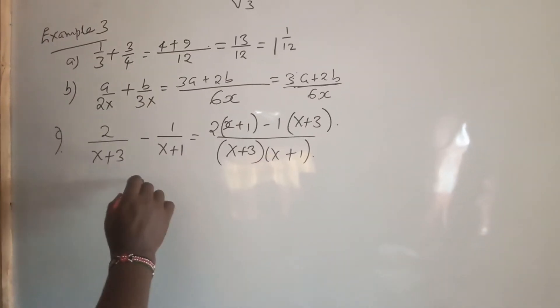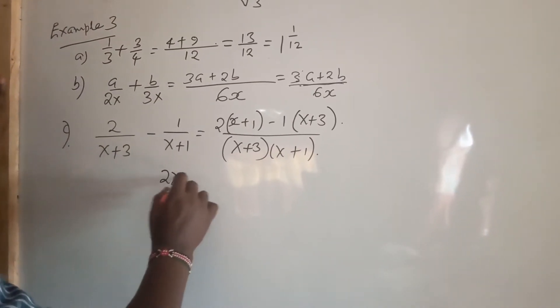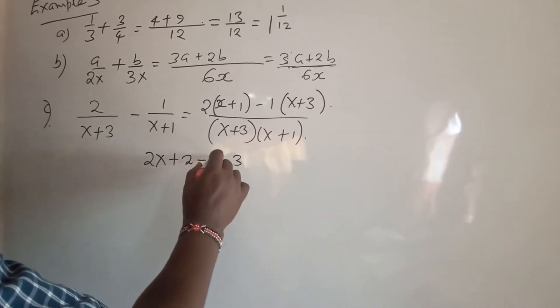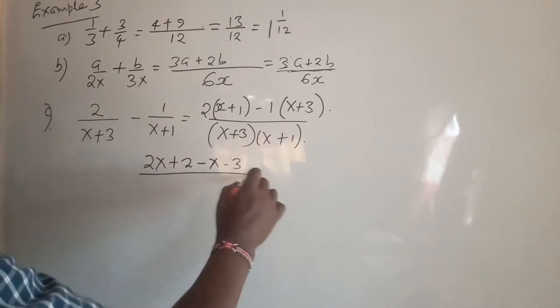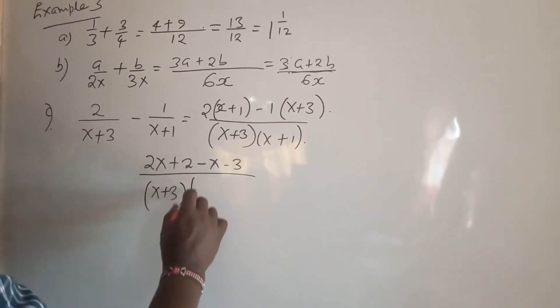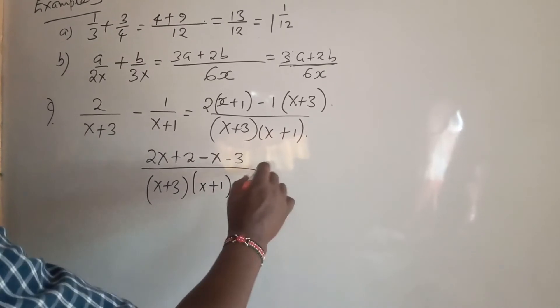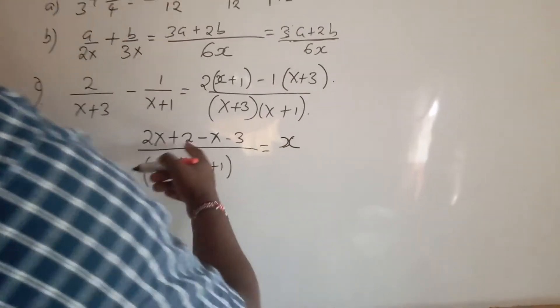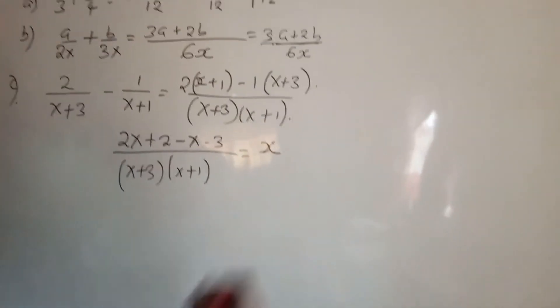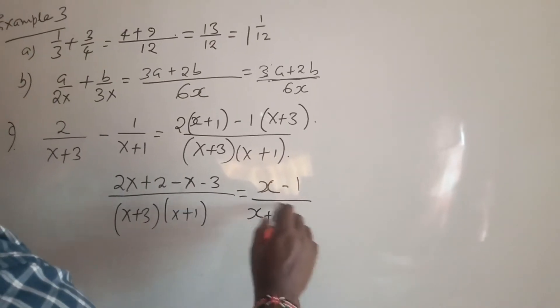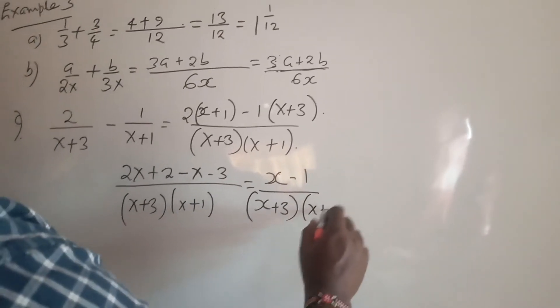Opening the brackets, you have 2x + 2 - x - 3, all over (x+3)(x+1). Collecting like terms, 2x minus x is x, and 2 minus 3 is negative 1.